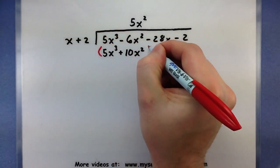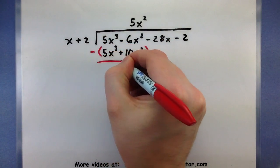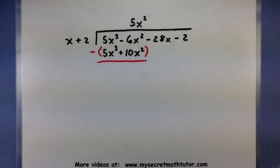I always like to put a big set of parentheses and a negative sign when I'm subtracting so I can keep track of all of my signs. Let's see how this works.